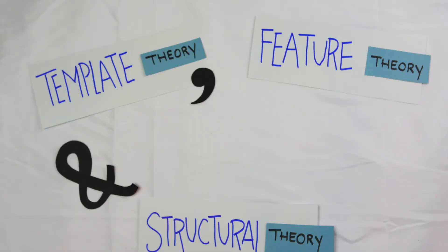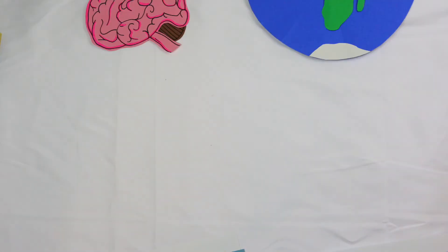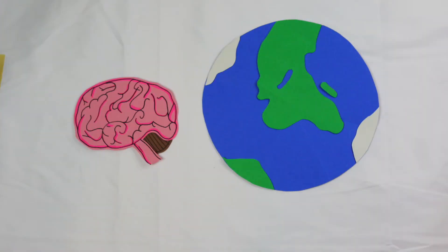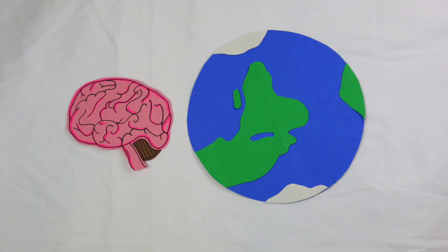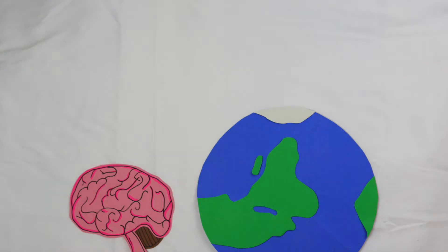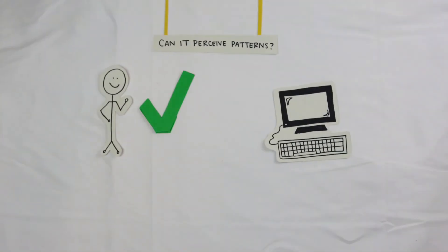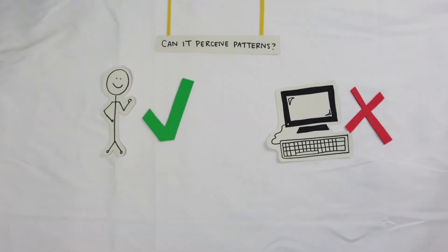Template theory, feature theory, and structural theory are all theories of pattern recognition in which our brain is trying to make sense of the world and all of its ambiguous information. The recognition of patterns is one of the things that humans are actually very good at, though computers are not.